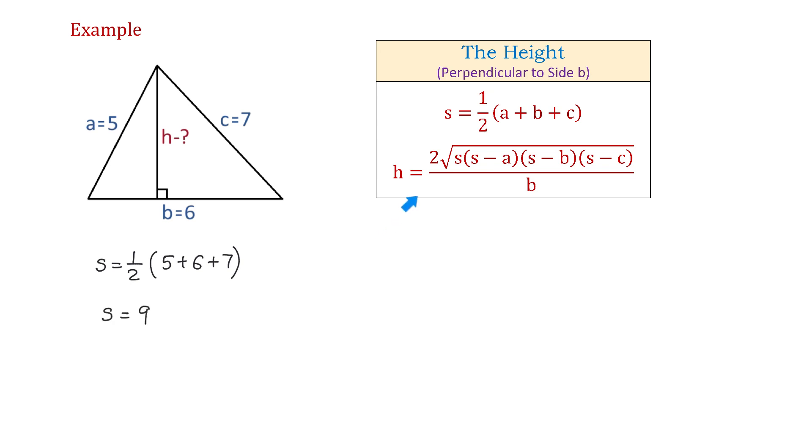And now, let's find the height. h equals 2 times square root of 9(9 - 5)(9 - 6)(9 - 7) all over 6.